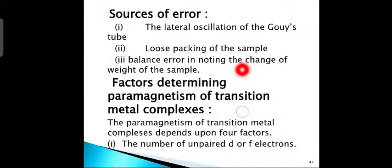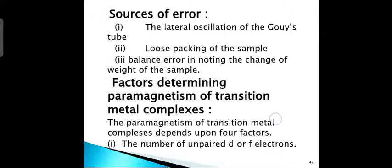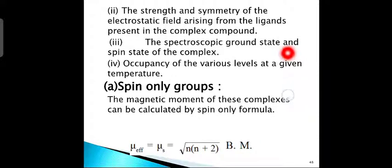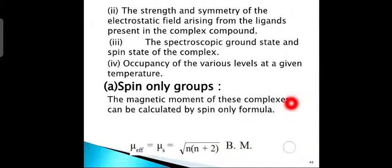Factors determining paramagnetism of transition metal complexes: first, the number of unpaired d and f electrons; second, the strength and symmetry of the electrostatic field arising from the ligands present in the complex compound; third, the spectroscopic ground state and spin state of the complex; fourth, occupancy of the various levels at a given temperature. For group A, spin-only complexes, the magnetic moment can be calculated by the spin-only formula: μ_eff = μ_S = √(N(N + 2)) Bohr magnetons.